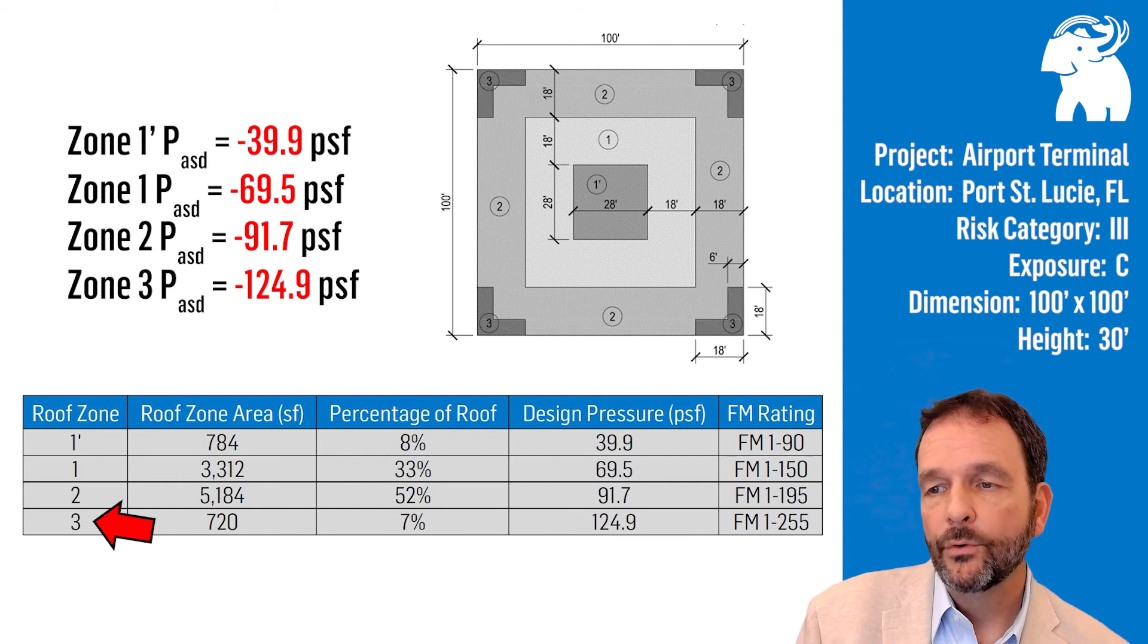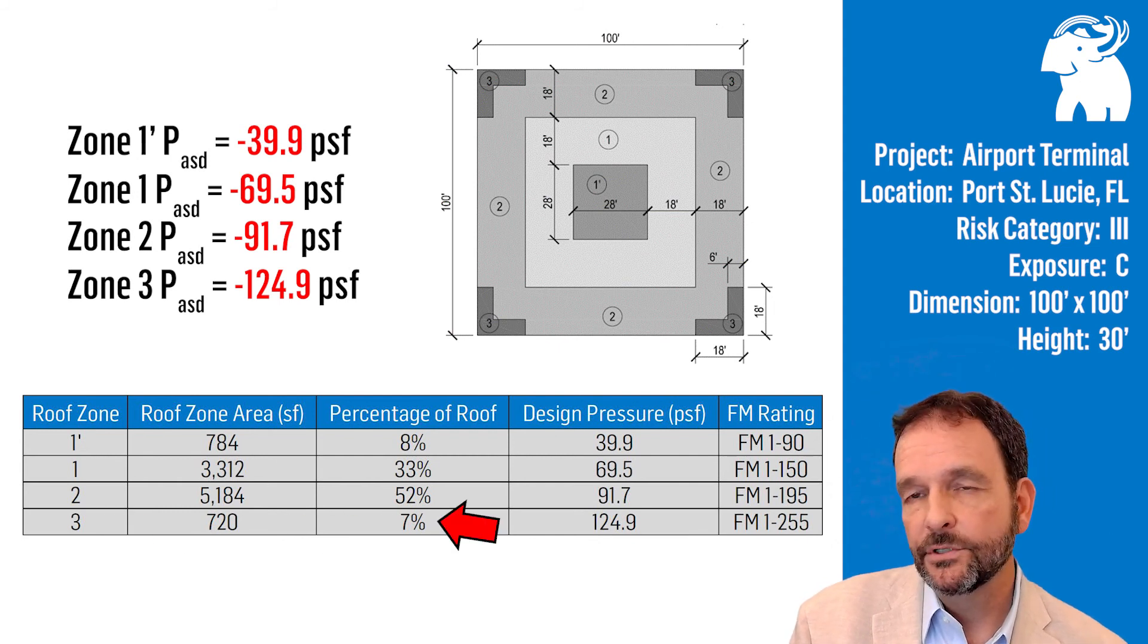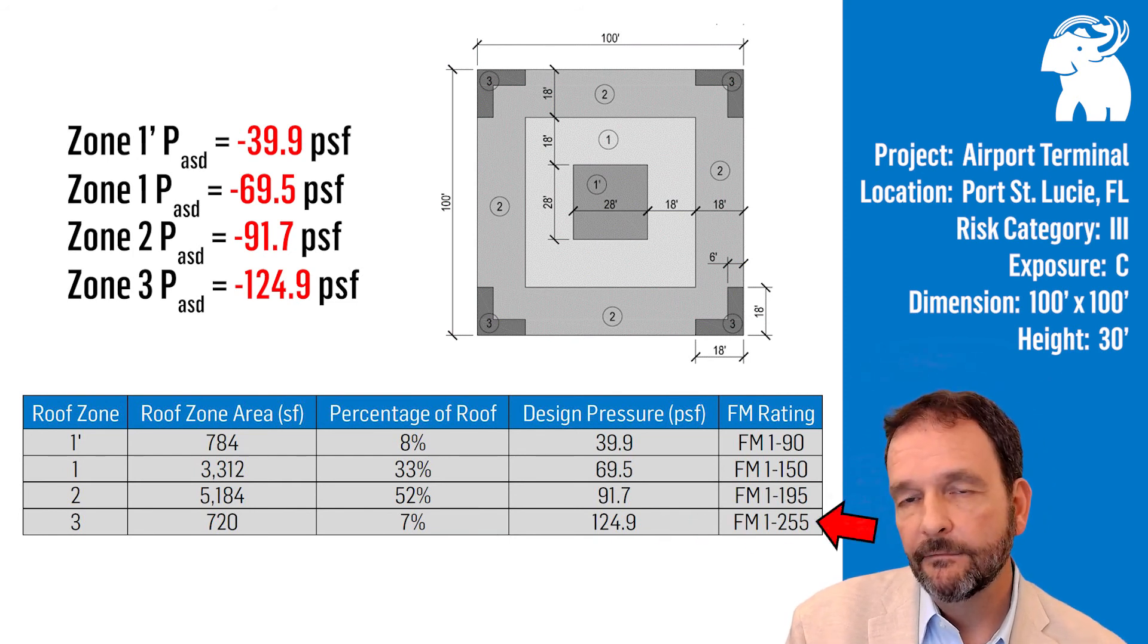In zone 3, the corners, small area, 7% of our example, requiring an FM 1-255 rating.